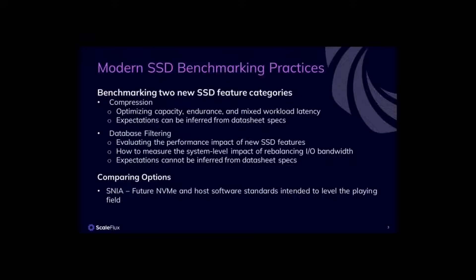For embedded functions, it's a little more complex. There are a number of embedded functions that can be implemented on computational storage devices. One example is database filtering, which typically looks at scan offload and the like. When using this sort of function on computational storage devices, it helps minimize the impact of scans and other operations, thereby freeing up bandwidth for other tasks. It's crucial to understand that these benefits aren't easily evaluated just by looking at a data sheet. You need to delve deeper, not only into application-level testing, but lightly using sample production data.